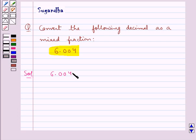So first of all we write the given decimal without a decimal point as the numerator of the fraction. So this is equal to 6004 in the numerator and in the denominator we write 1 followed by